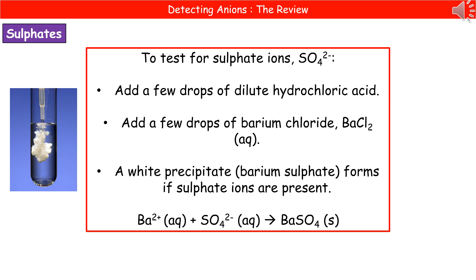We need to know how to identify three different types of anion. The first is how we test for sulfate ions. The sulfate ion has the chemical formula SO₄²⁻. To test for it, we take our solution with the unknown chemical, add a few drops of dilute hydrochloric acid first, and then add a few drops of barium chloride. If a white precipitate forms, we have sulfate ions; if not, no sulfate ions.